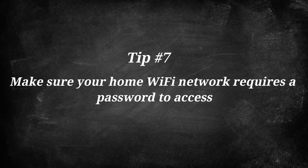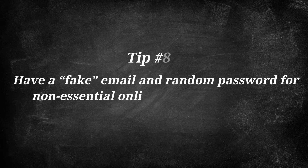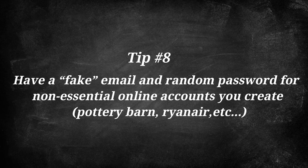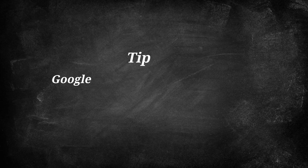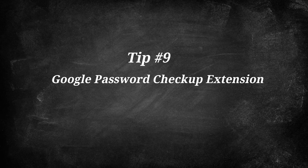Number seven: make sure your home Wi-Fi network requires a password to access it. Number eight: have a fake email and random password for non-essential online accounts you create — for example, if you're using Ryanair, Pottery Barn, or similar non-essential vendors, use a separate email that's separate from your main email tied to your financial accounts. Number nine: there is the Google Password Checkup extension. If you are using Chrome, it is built into newer versions, but if you're on an older version, check out the Google Password Checkup extension. When you log into different websites, it will check if your account and password combination have potentially been part of previous breaches and recommend you change it.